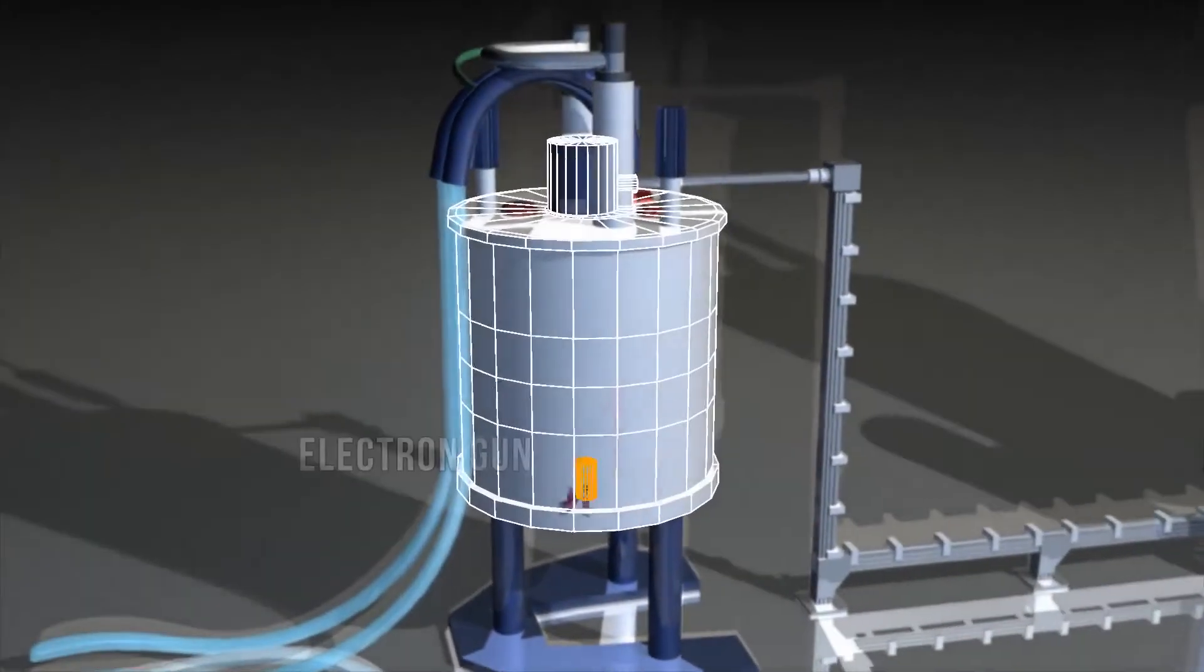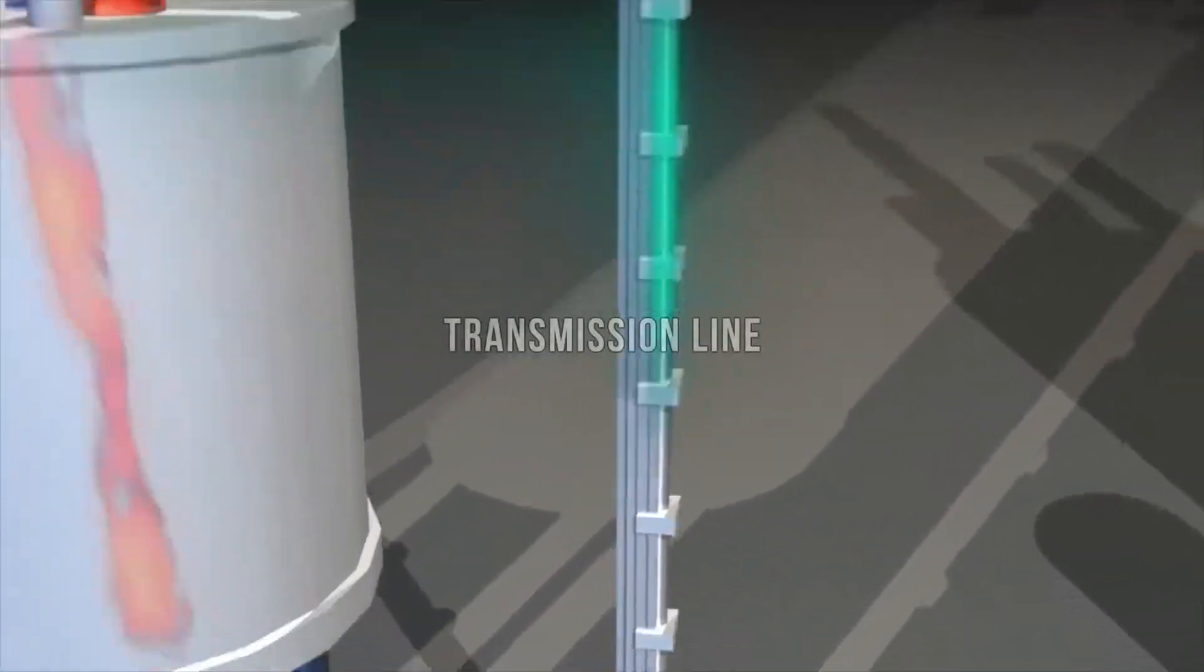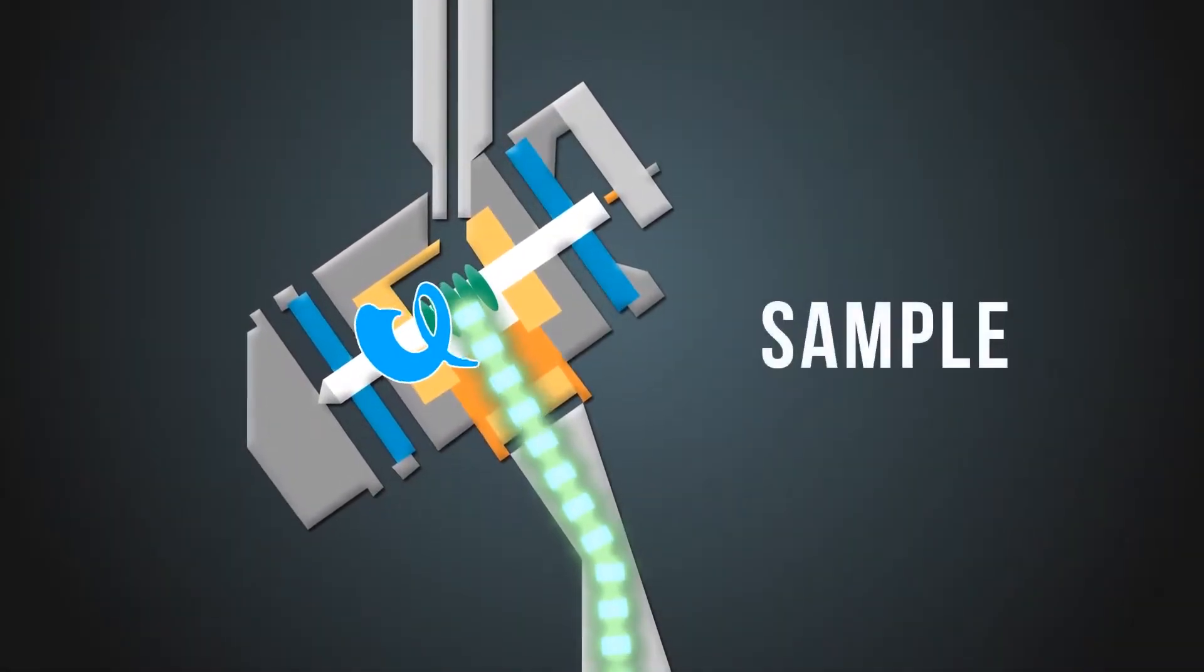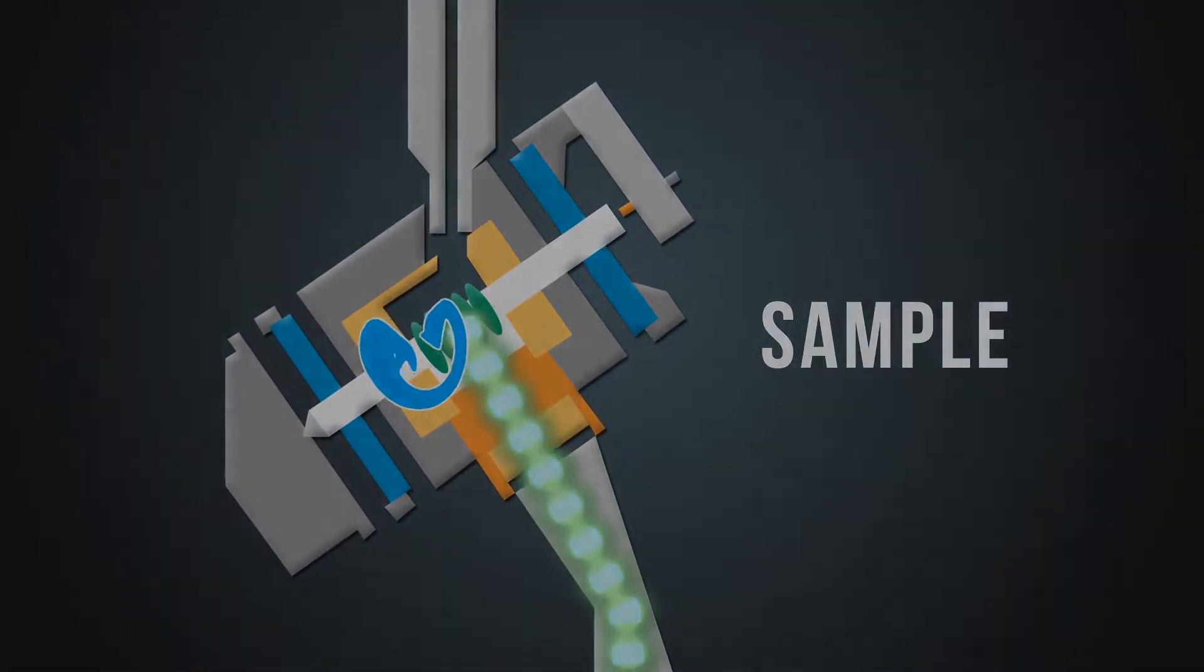We are currently using NMR techniques such as fast magic angle spinning and dynamic nuclear polarization to enhance the sensitivity of NMR experiments on perovskites. Both of these techniques can reduce NMR experiment times by orders of magnitude.